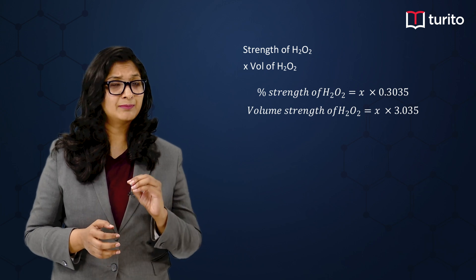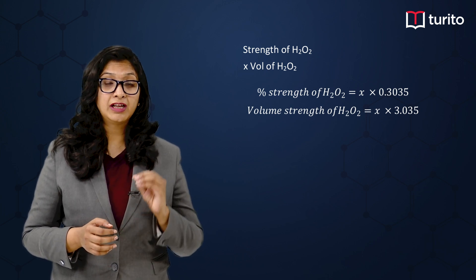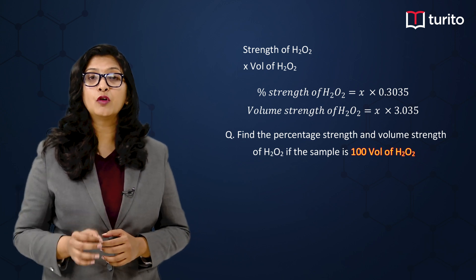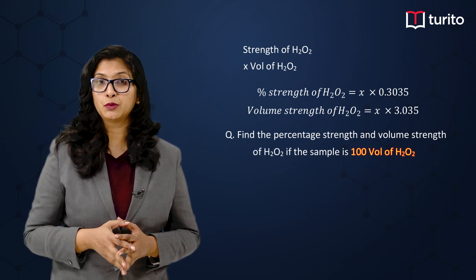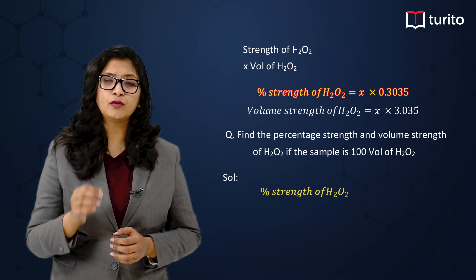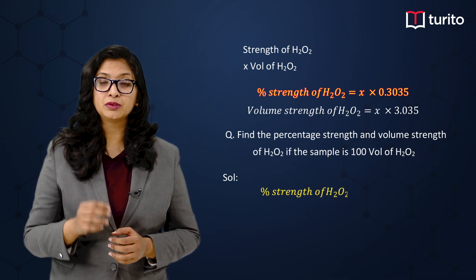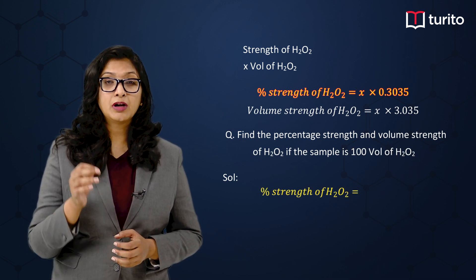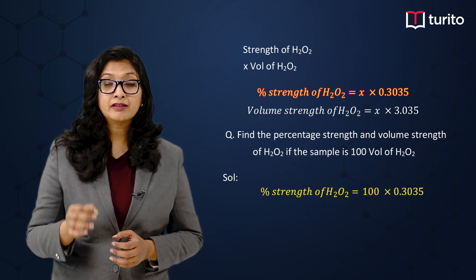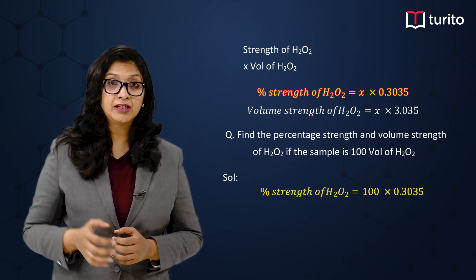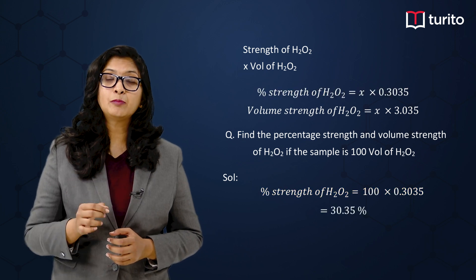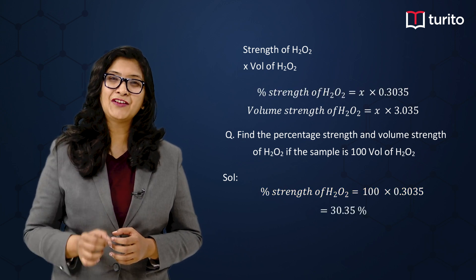Let us understand this better with a particular example. Let us say I am having 100 volume of H₂O₂. If I have to find out the percentage strength of H₂O₂, then it will be equal to 100 into 0.3035. That means the value will be 30.35 percent.